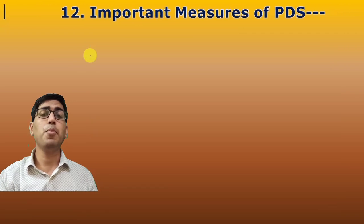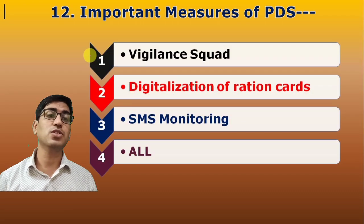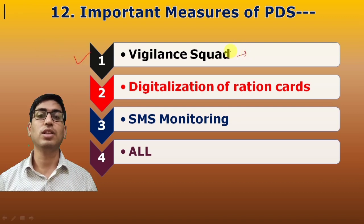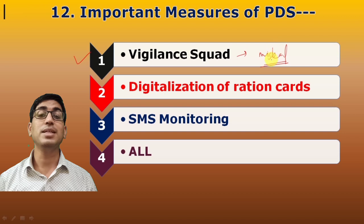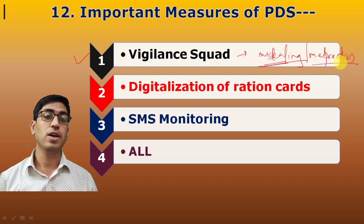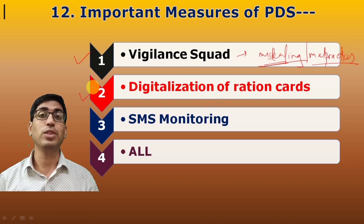Twelfth question: Important reform measures of PDS. The answer includes Vigilance Committees — these help to curb misleading practices and protect against different types of mal-practices. Also SMS monitoring to track exact beneficiary numbers. Vigilance Committees and SMS-based monitoring are key reform measures.